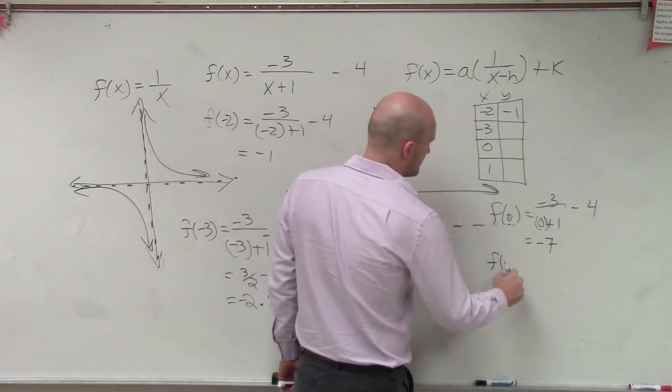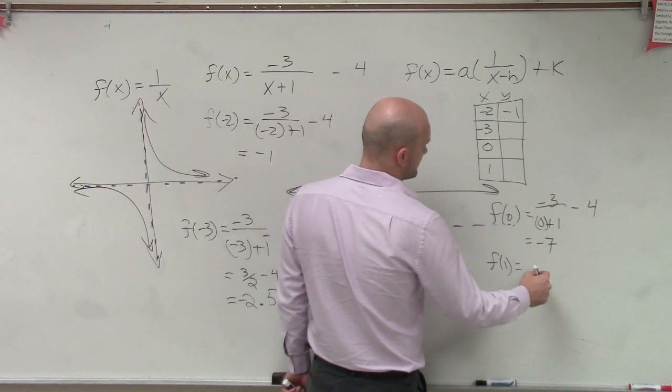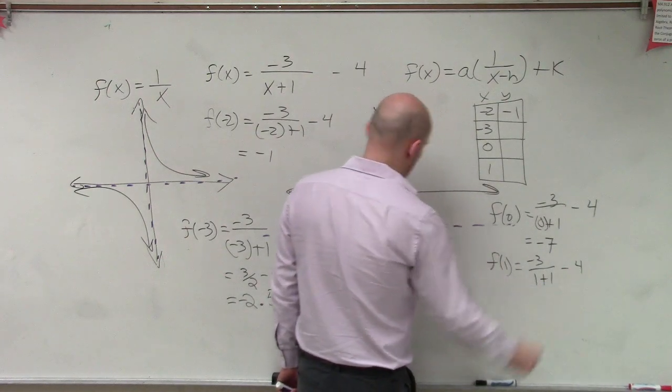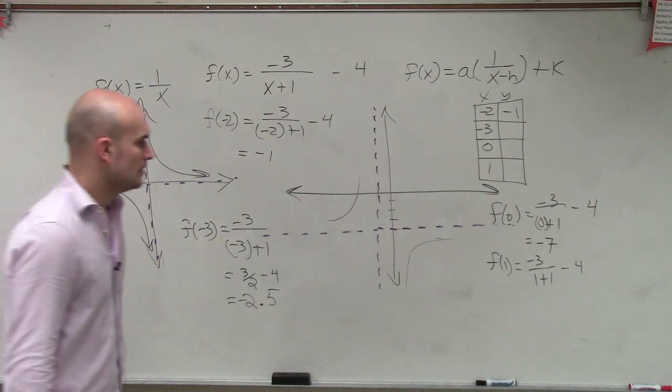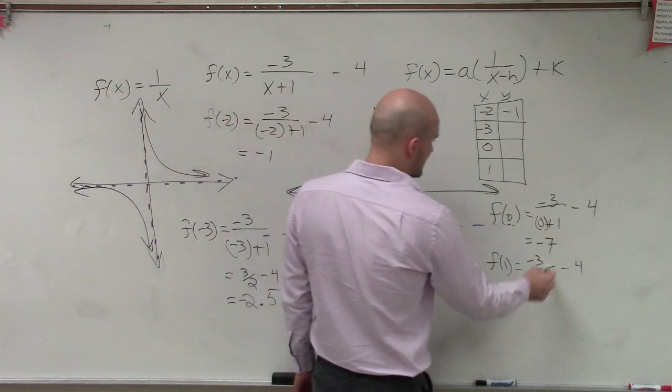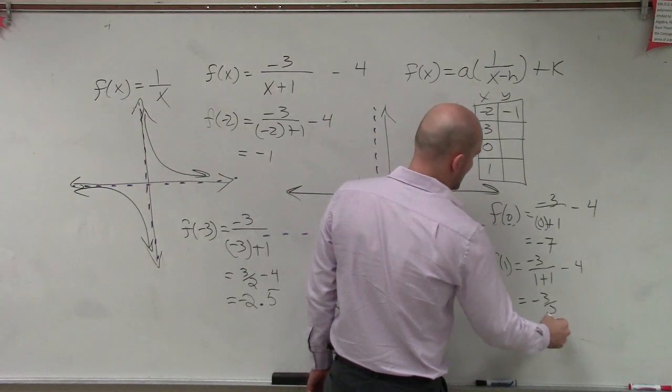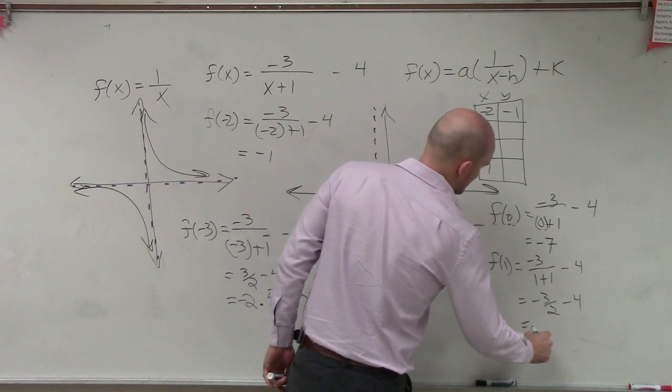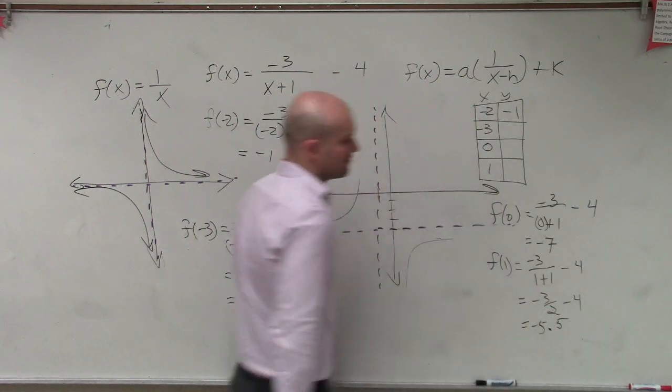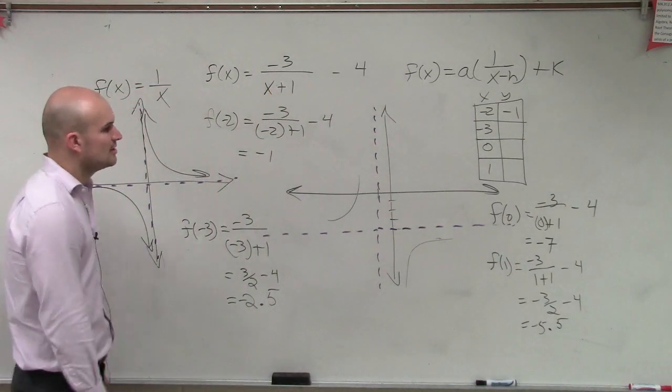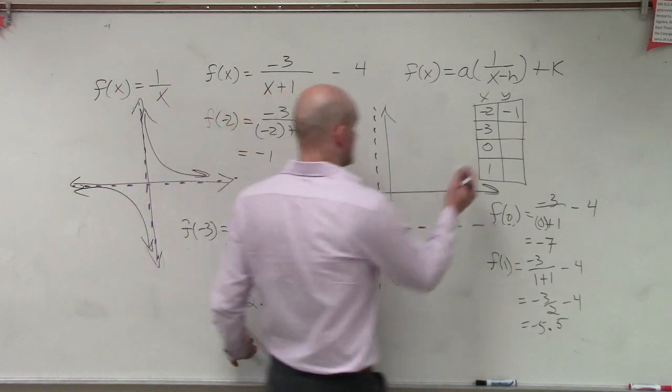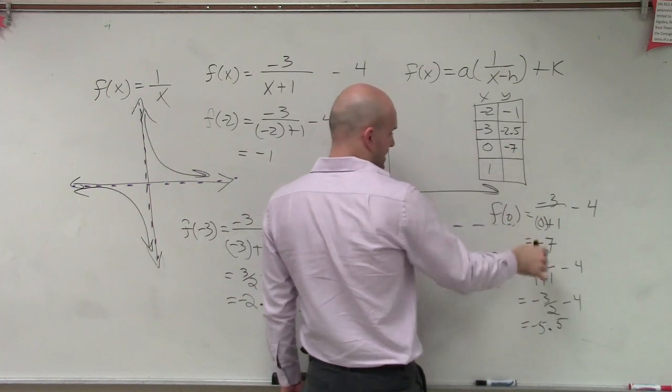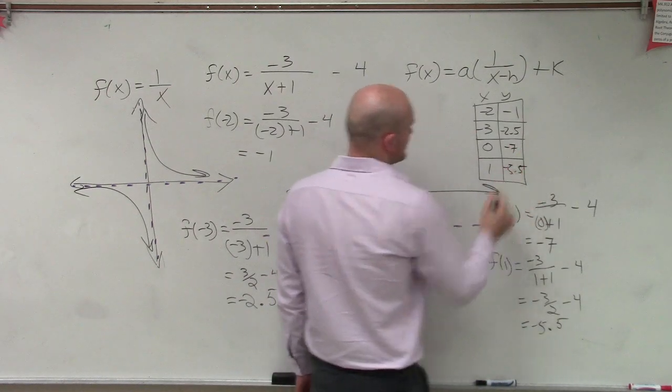Now, we look at f of 1. f of 1, I just take negative 3 divided by 1 plus 1 minus 4. And then here, I'm going to have 2. So this one equals negative 3 halves minus 4, which would be a negative 5.5. And I'll just use decimals to help you guys out as far as graphing goes. So now, let's plot our four points. Oh, sorry. Let's write these down. So this is negative 2.5. This is 0 is negative 7. And at 1, we have negative 5.5. So let's plot the points.